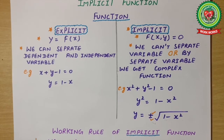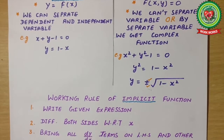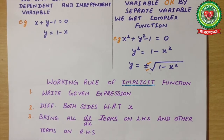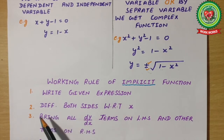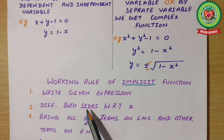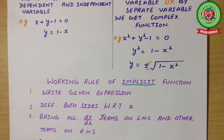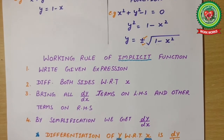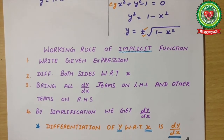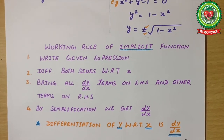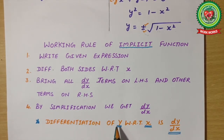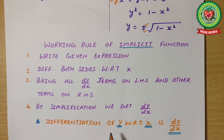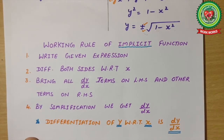We have some working rules for implicit functions. According to those rules: number one, write down the given expression; number two, differentiate both sides with respect to x; number three, shift the dy/dx term to one side and the other terms to the other side. By simplification, we will get dy/dx as the answer. Keep in mind: differentiation of y with respect to x is dy/dx, or d/dx of y is dy/dx.